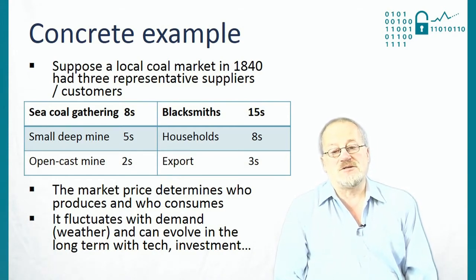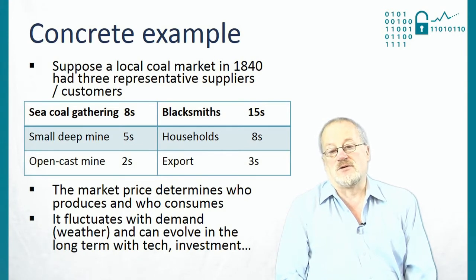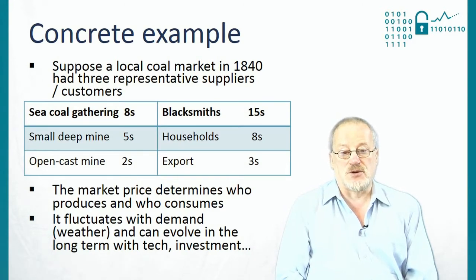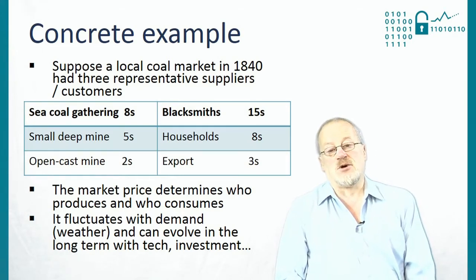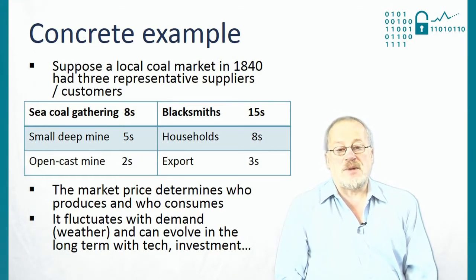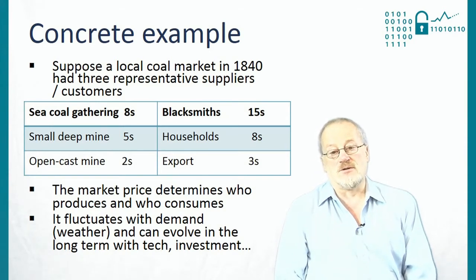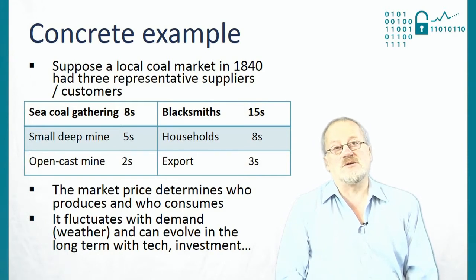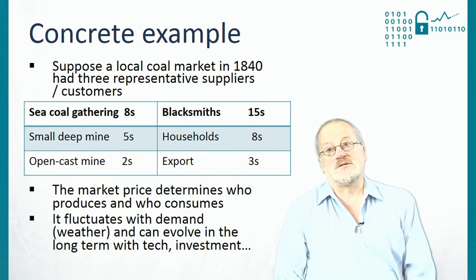The interesting insight here is that the market price determines who's going to produce and who's going to consume. In summer, when households aren't burning coal, baseline demand comes from exports and blacksmiths, satisfied by the open-cast mine alone — the small deep mine stays closed. But when winter comes and households demand coal, the deep mine opens, and if demand exceeds its capacity, the price rises to eight shillings a tonne and people begin gathering coal on the beaches. The price is set by the marginal demand and the marginal supply — the last supplier to enter the market and the last customer to be satisfied.